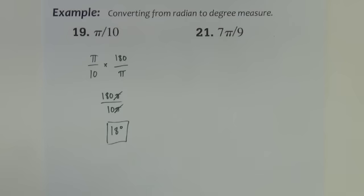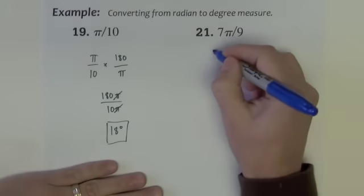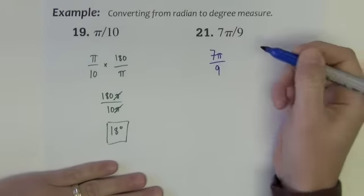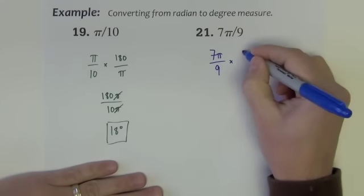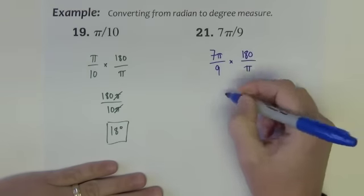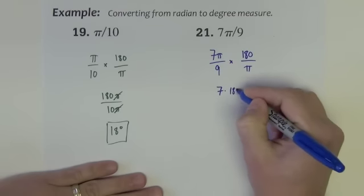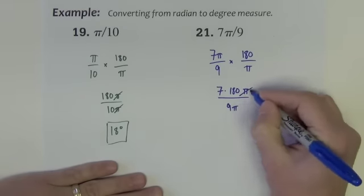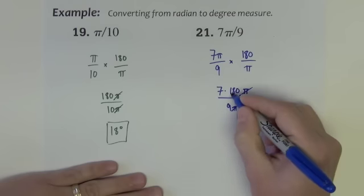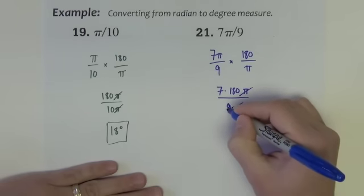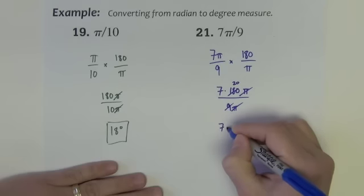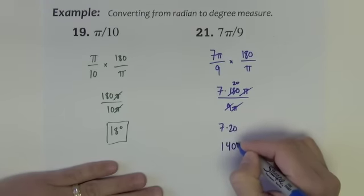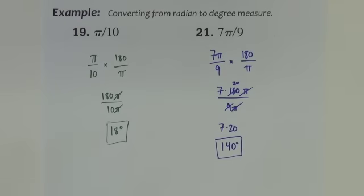Mystery solved — it's not that big of an angle. What about 7 pi over 9? How many degrees is that? We take it times 180 over pi, giving 7 times 180 pi divided by 9 pi. The pi cancels, and 9 goes into 180 twenty times, so we have 7 times 20, which is 140 degrees. So 7 pi over 9 is 140 degrees.